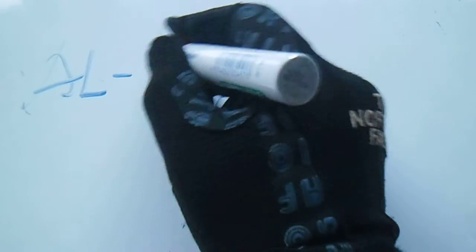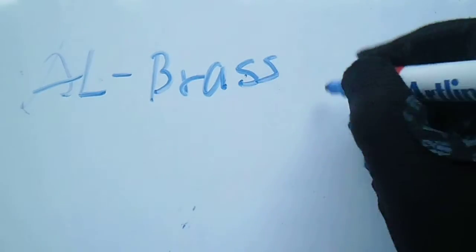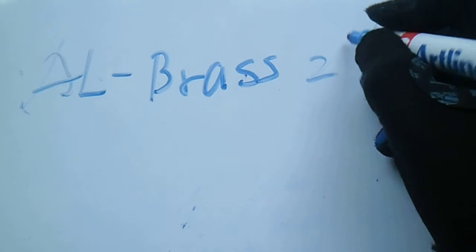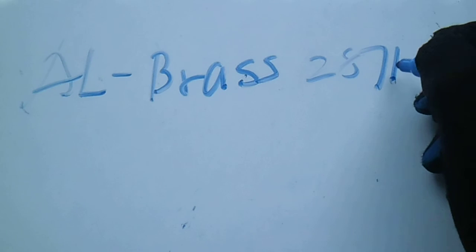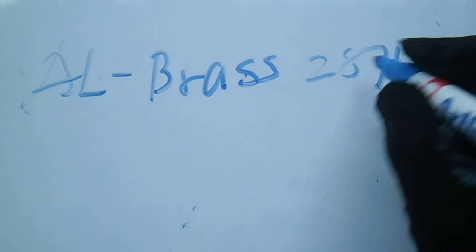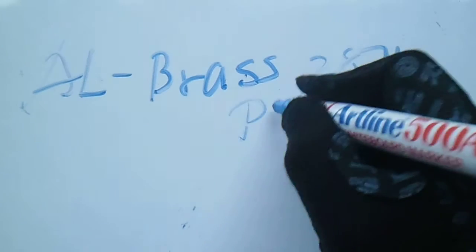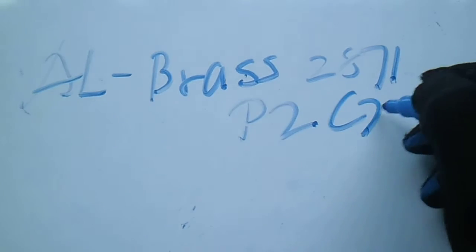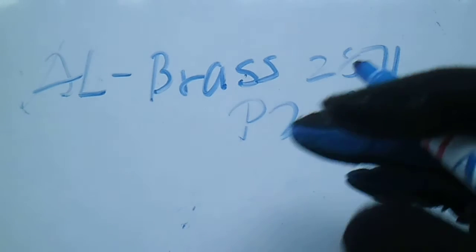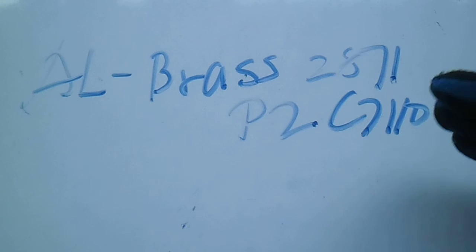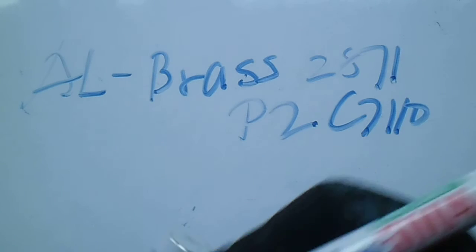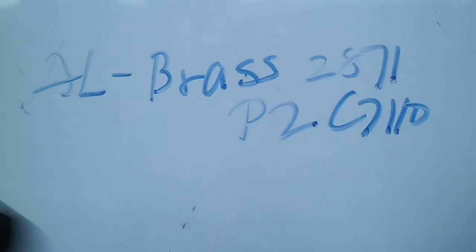We also have AL Brass pipe. The ASTM code is B287 P2 CC110, and the color is no color. The wall thickness is 1905.